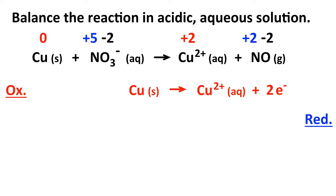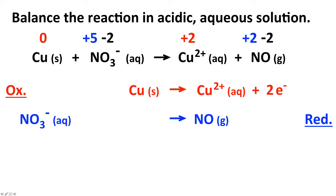Now for the reduction half-reaction: nitrate ion (NO3 minus) forming nitrogen monoxide gas. First, we balance elements other than hydrogen and oxygen — that's nitrogen here. There's one nitrogen on the left and one on the right, so nitrogen is already balanced. If it were something like N2O, we'd need a coefficient of two in front of NO3 minus to balance nitrogens.